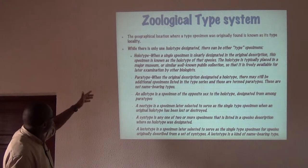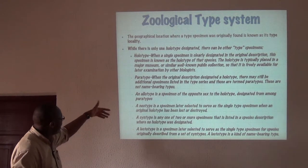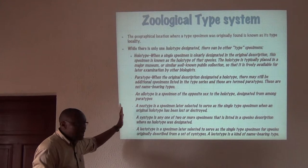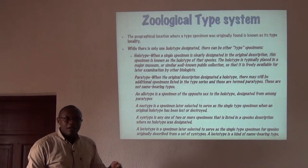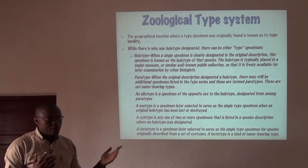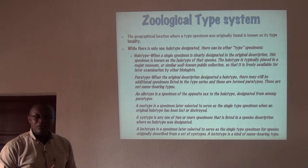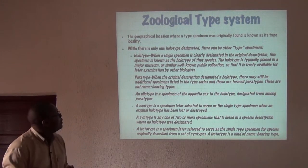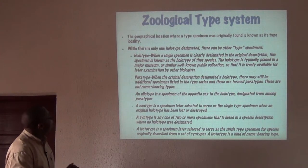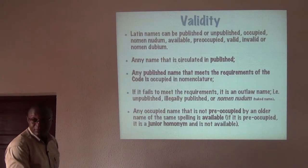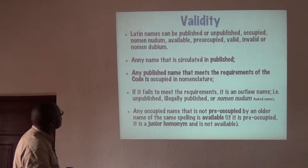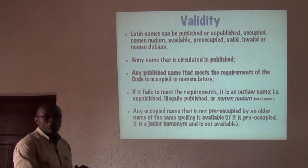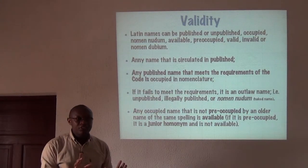We have now discussed holotype, paratype, and allotype while talking about plants, so we're going to move forward to discuss validity.